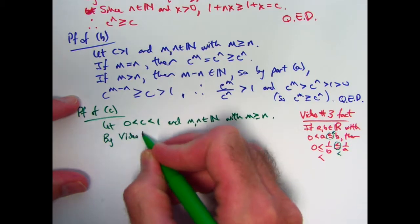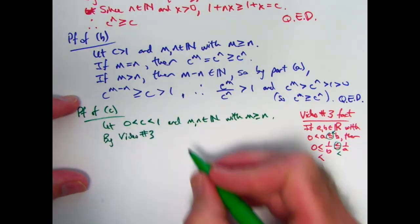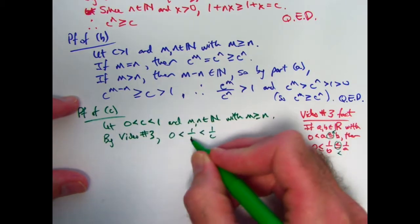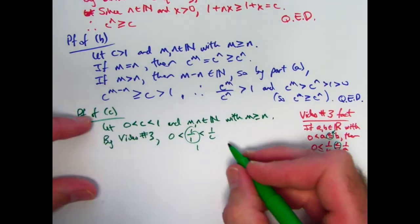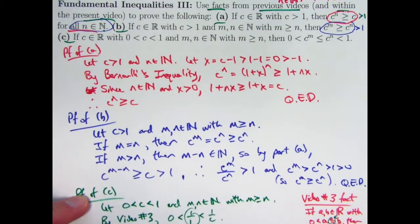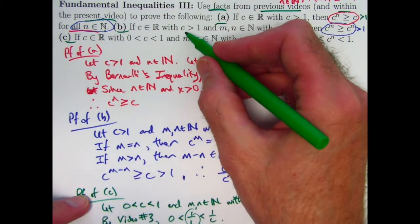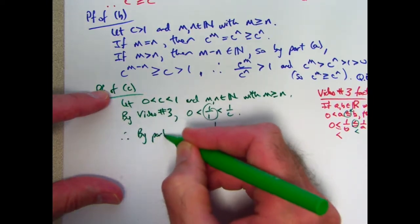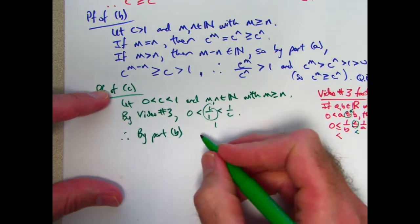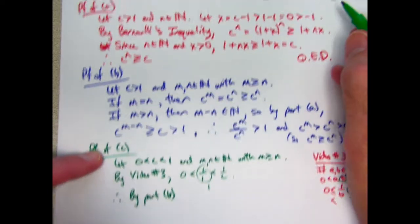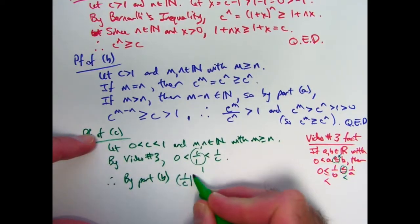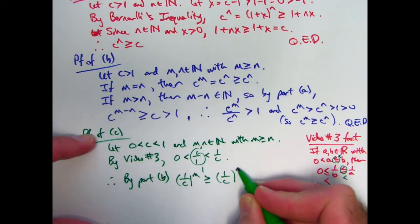Essentially, I can use video number 3 fact to say that 1 is less than 1/c. I'll just say by video number 3 when I really mean video number 3 fact. I can say 0 is less than 1/1 is less than 1/c, and that equals 1. So I may now apply part B to 1/c instead of c. Therefore, by part B, I can say that, looking at part B here, with 1/c in place of c, (1/c)^m is greater than or equal to (1/c)^n.